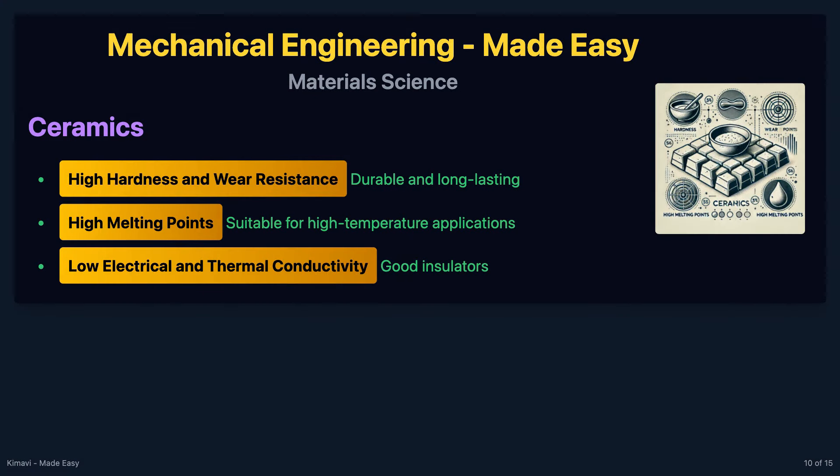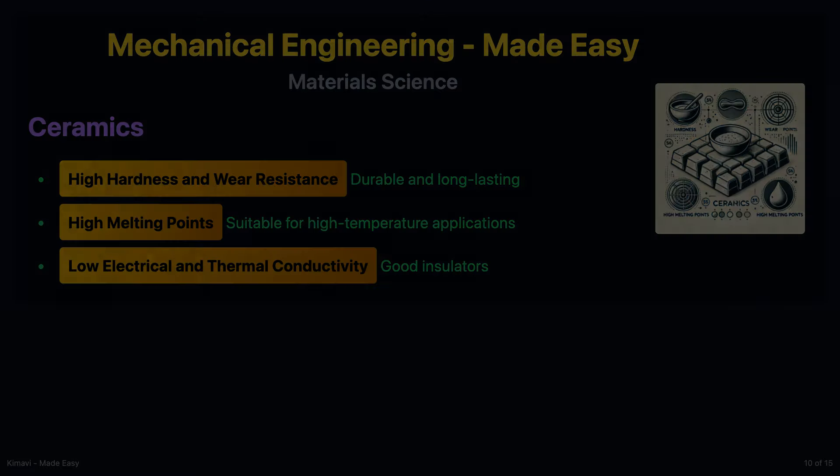Ceramics are non-metallic, inorganic materials that are typically hard and brittle. Examples include alumina, silicon carbide, and zirconia. Ceramics have high hardness and wear resistance, high melting points, and low electrical and thermal conductivity, making them suitable for applications requiring high durability and insulation.